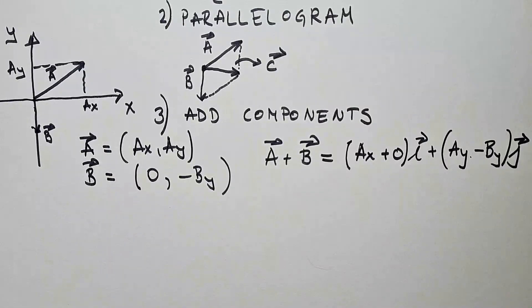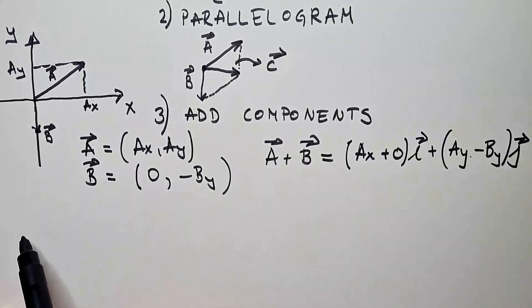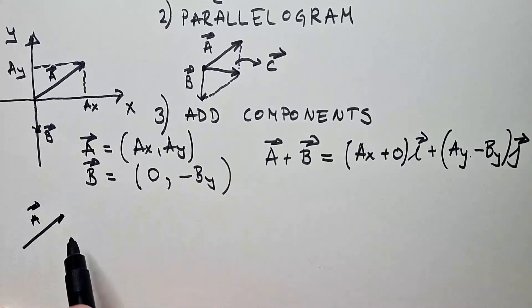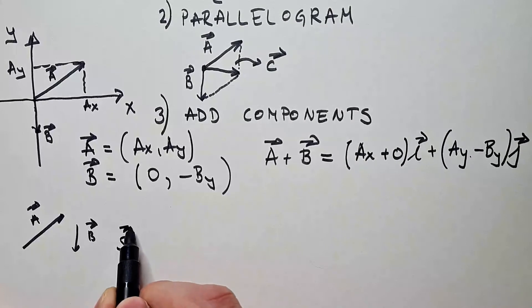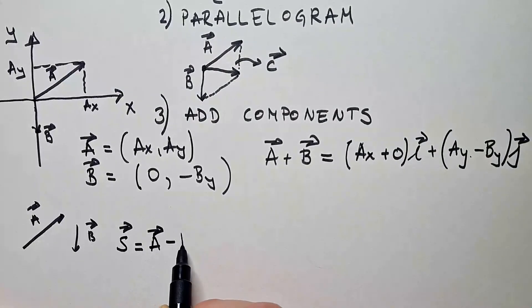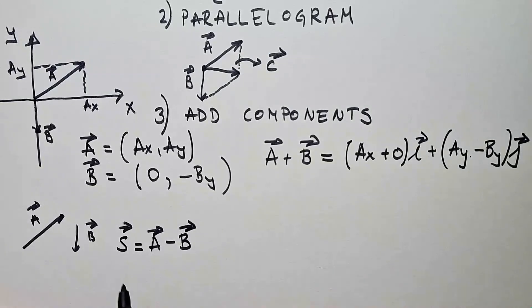Next question is how do we subtract vectors? Let's say we have these same two vectors that I described above, A and B. How do I subtract these two? Well, the way we subtract them, let's say some vector S that is equal A minus B, we get that S in the following way.